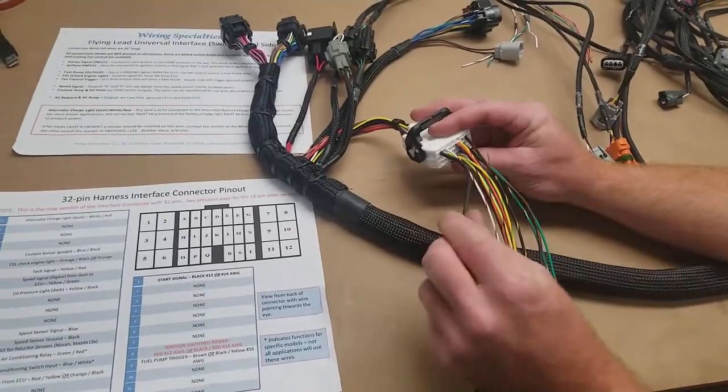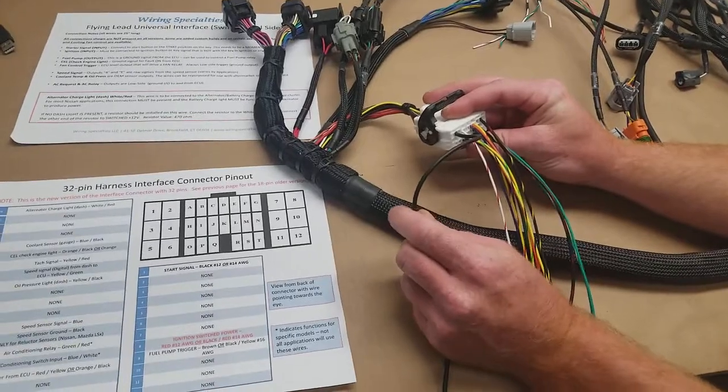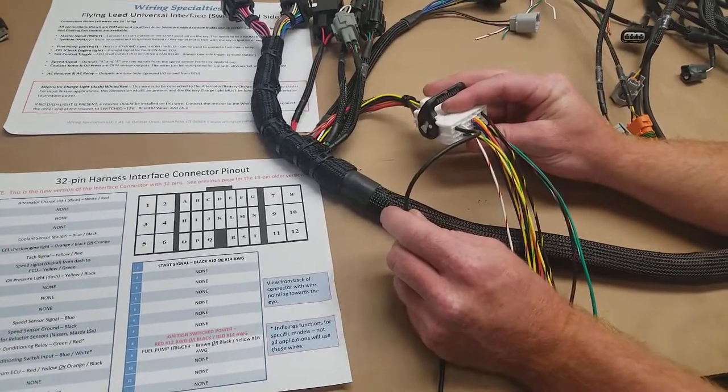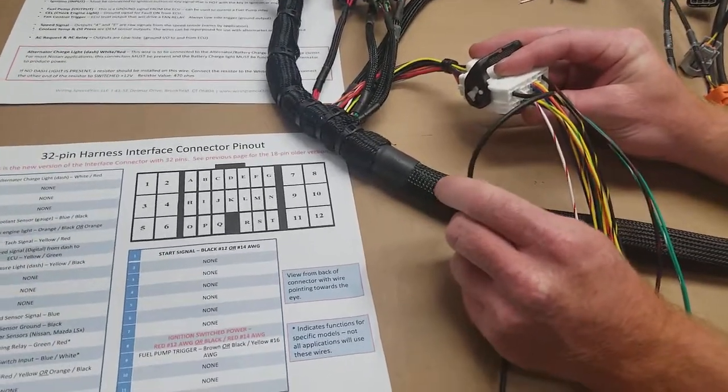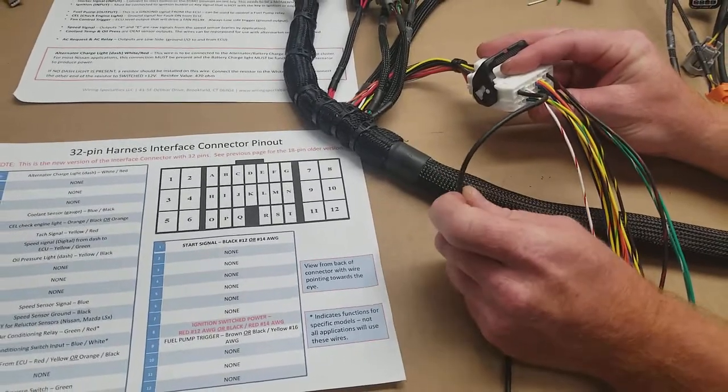The next wire we're going to take a look at is our starter signal. This is going to go directly from your key switch while you're cranking to the starter. Pretty easy. This is what's going to make your motor turn over.